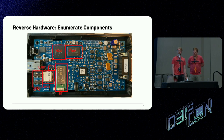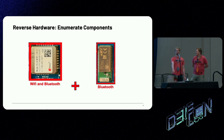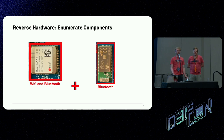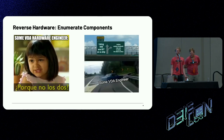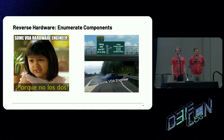The more astute of you might notice that the Wi-Fi chip has a Wi-Fi and Bluetooth stack, but there's also a separate Bluetooth chip on the board — which begs the question, why? We don't have a great answer. These memes probably illustrate our confusion as to why there were two independent Bluetooth stacks on this device, but it had both.